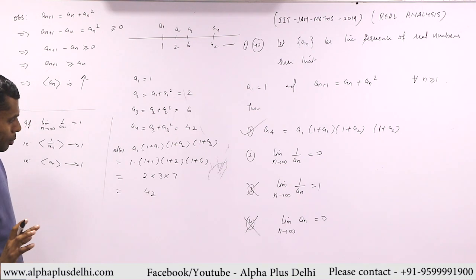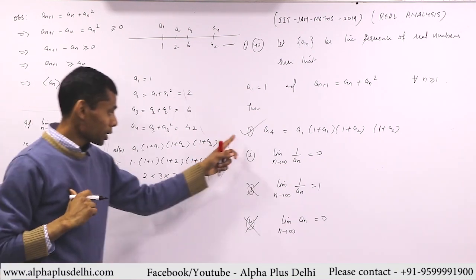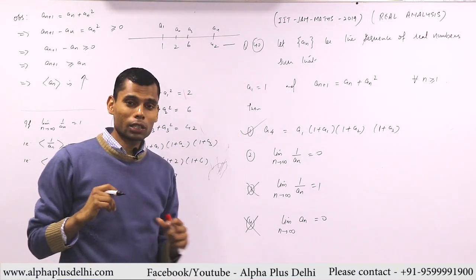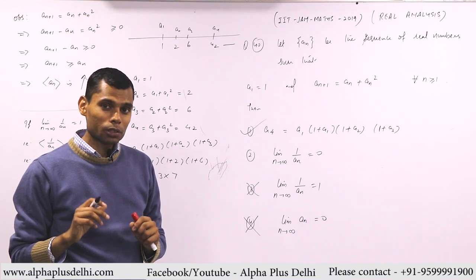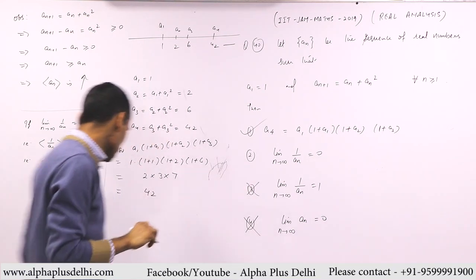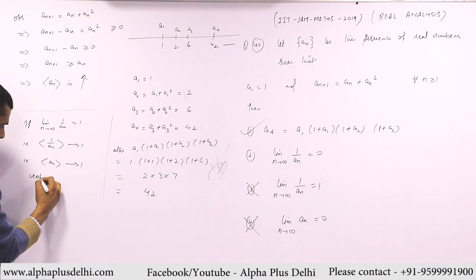Now the second option is left. It's possible that the first is correct, so is there any need to examine the second? Look, this is question number 40. Question number 40 means MSQ, multiple select. More than one can be correct. So you have to examine this as well. How will we examine it? Let's see.